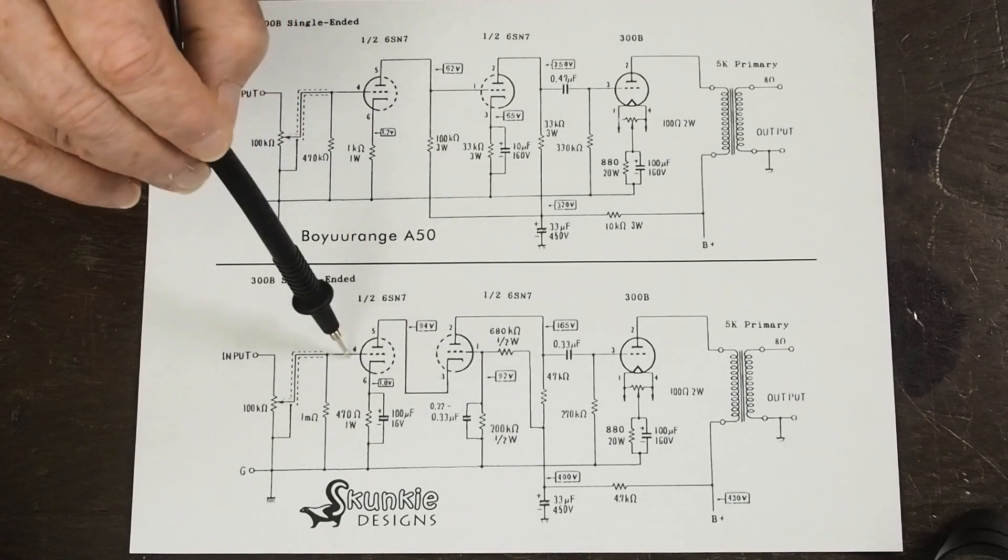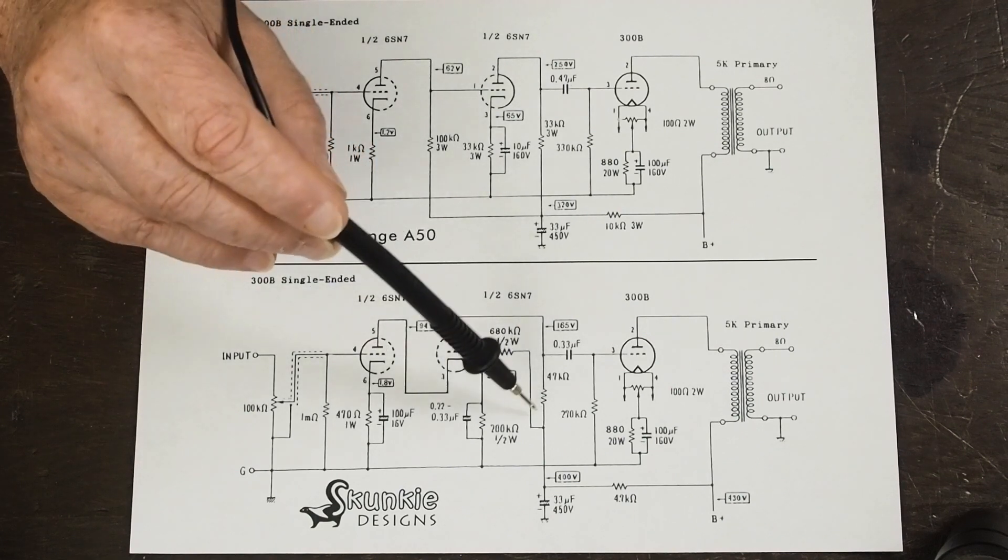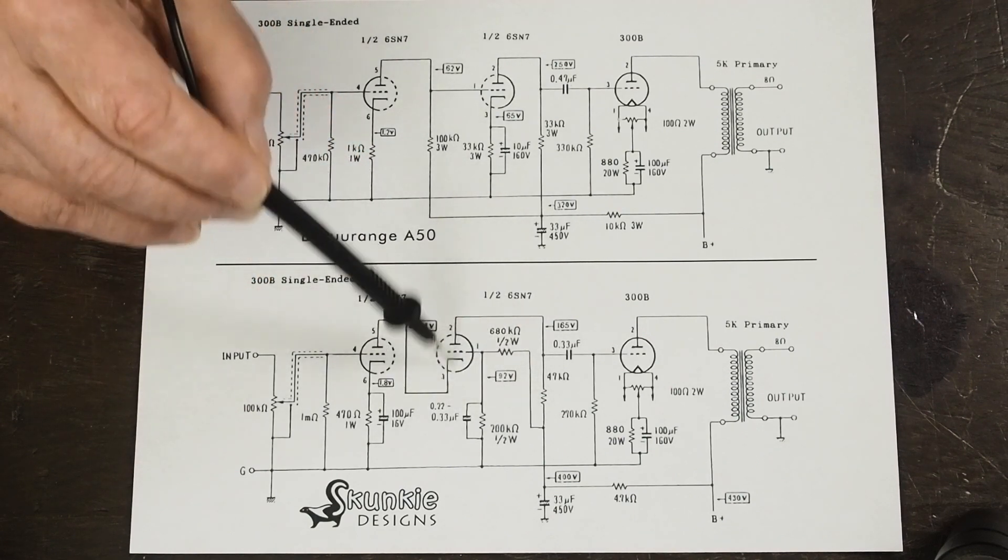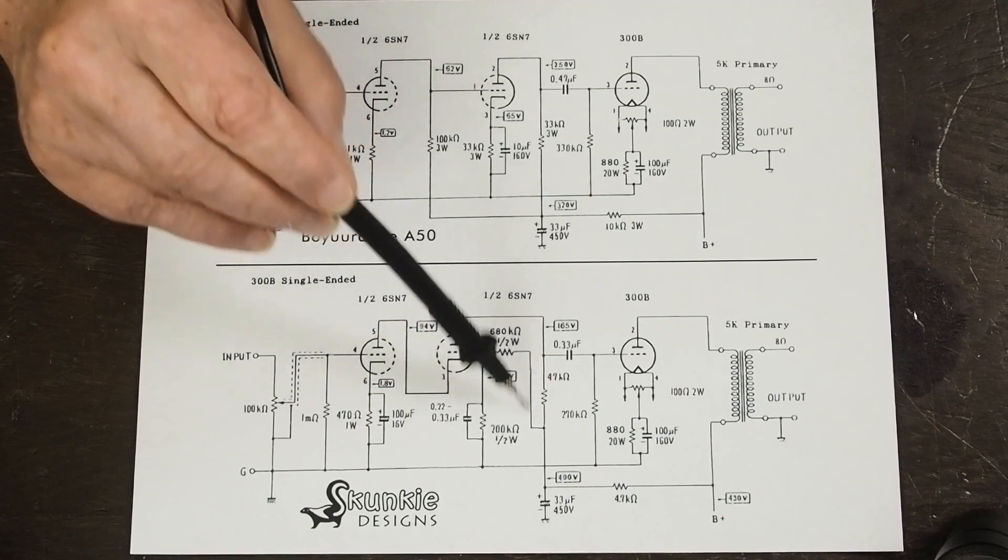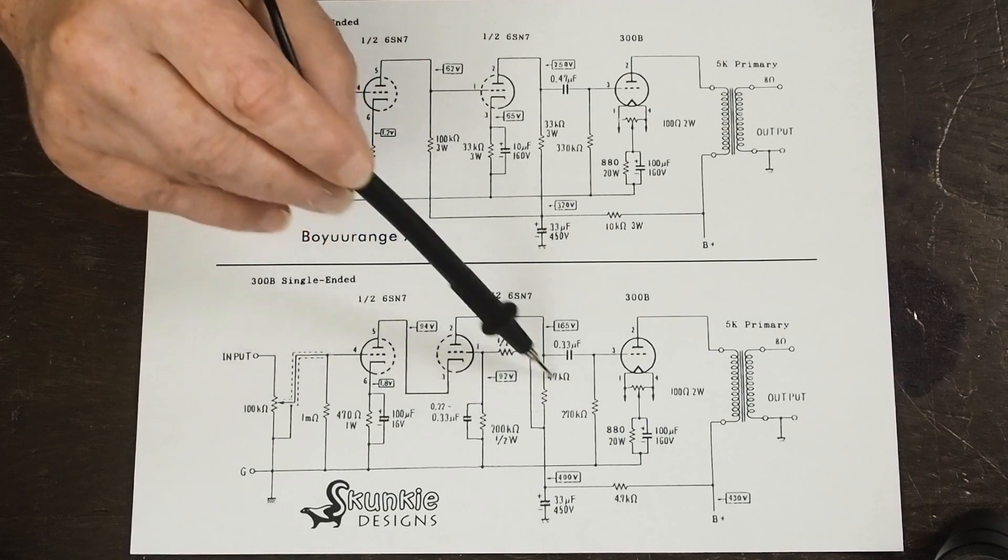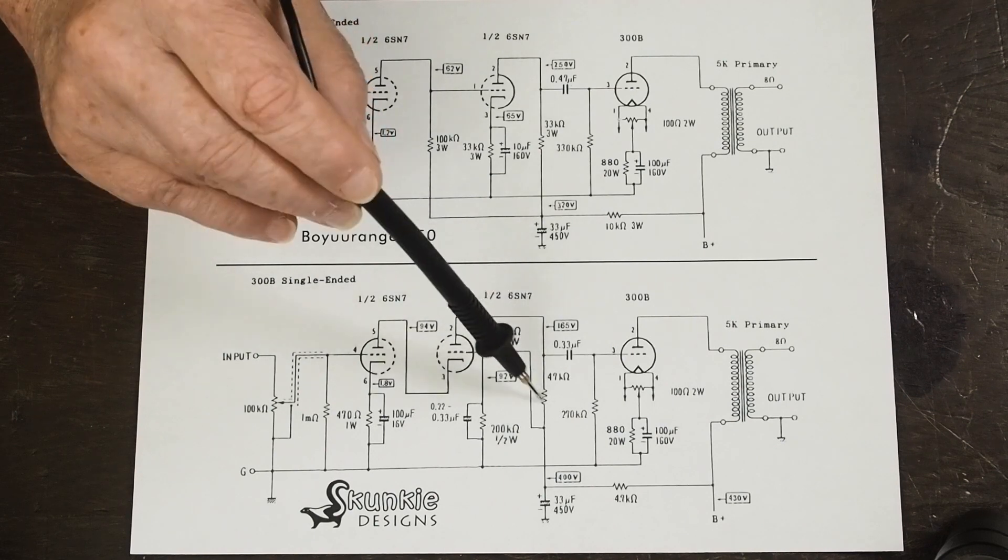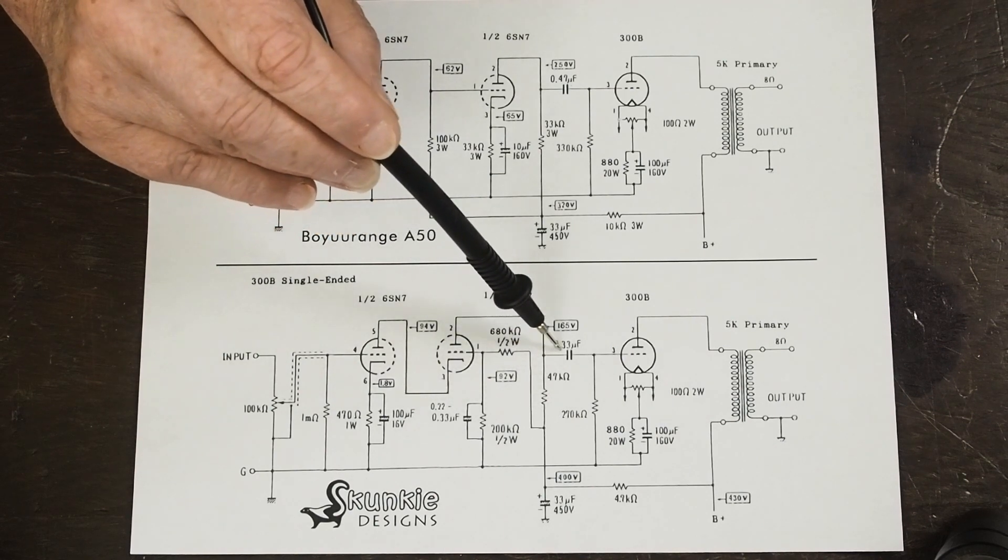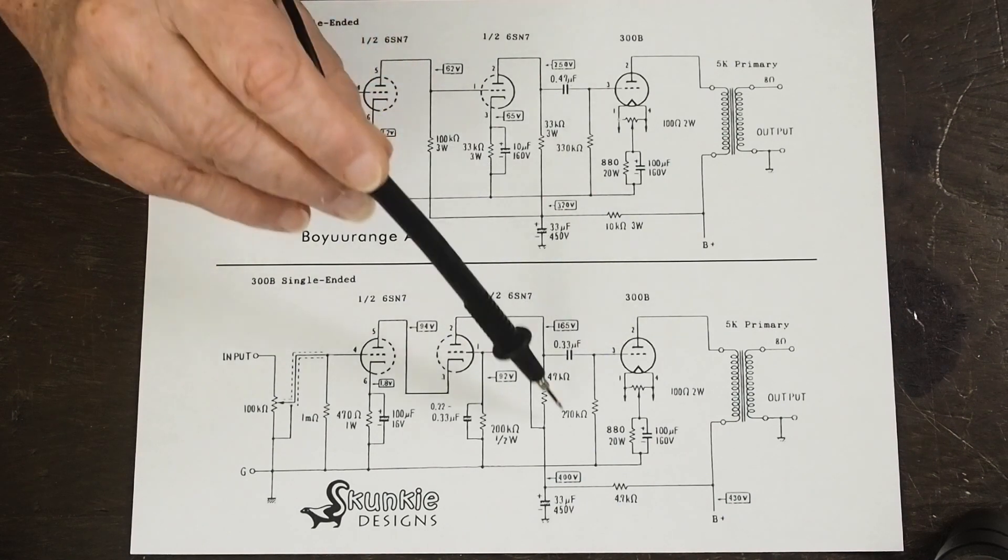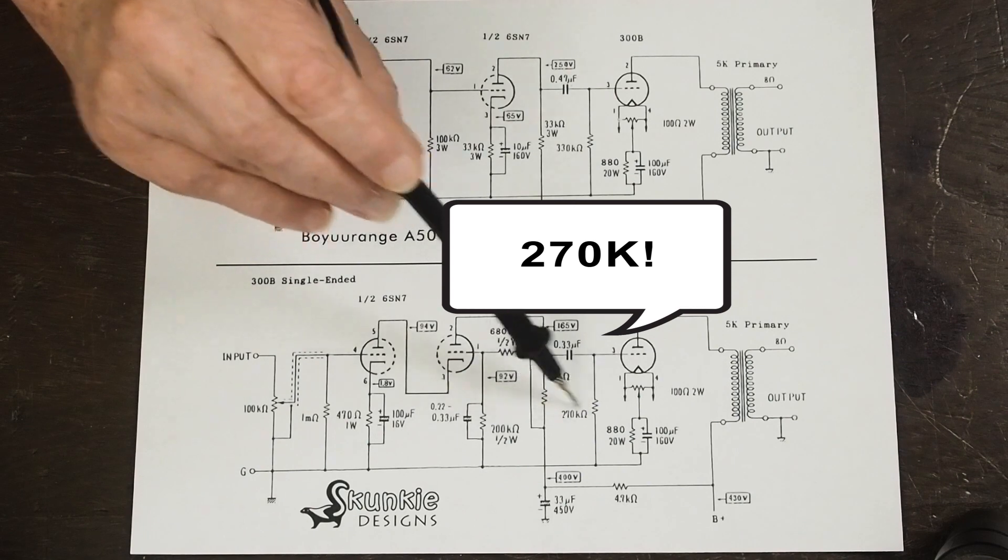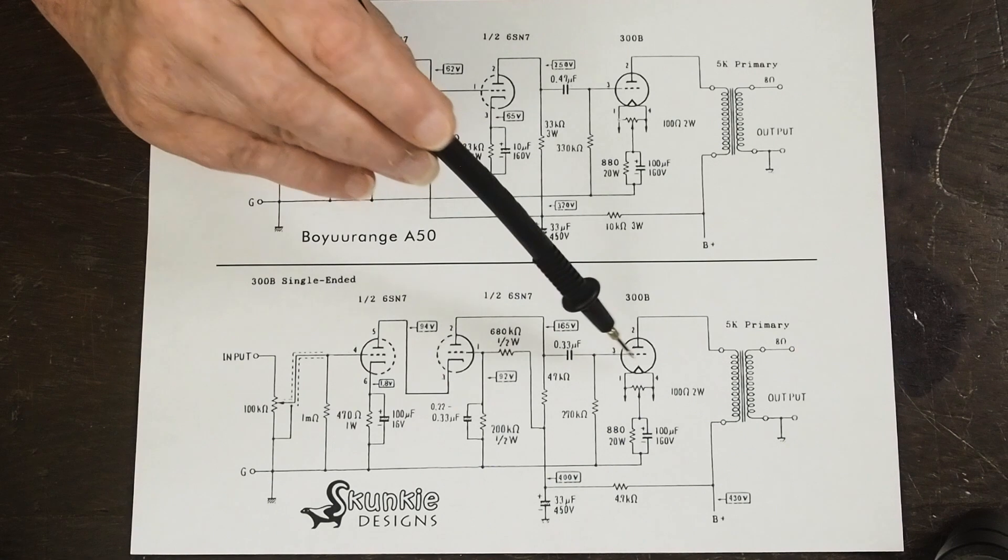Then in the final part the plate of the upper section of the cascode comes across here it's fed by this RC network again to eliminate motor boating and the voltage swing across this grid is then regulating the current that's going through both sections of this tube and here's where the voltage amplification happens is across this 47k resistor and then it's fed through this coupling capacitor to the grid of the 300B and then we're going to drop this down to a 370k to get more in line with what the grid leak resistor for a 300B should be.